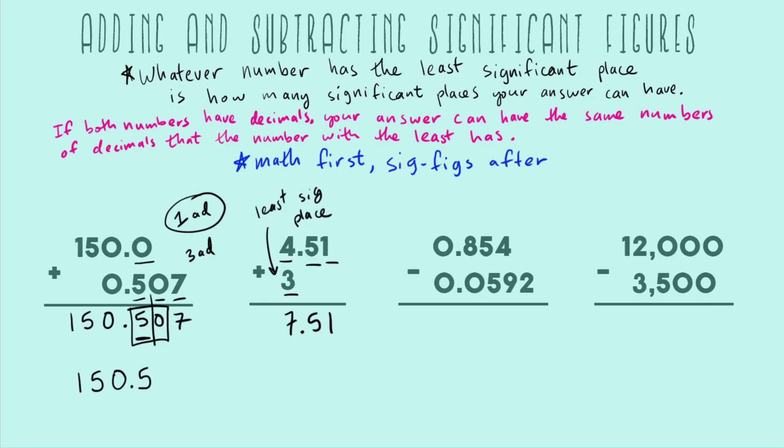It's our least accurate number. We don't really know any decimals that are past 3, so that means we're going to have to round our final answer right at the 1's place because that's our least significant place. In this case, we will be rounding up. So our final answer is 8.